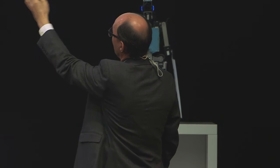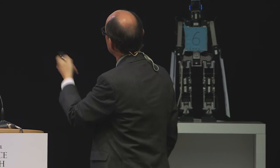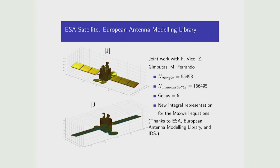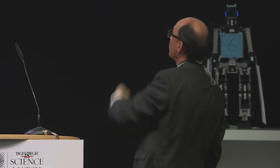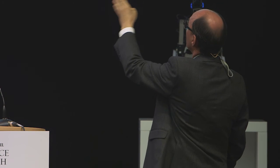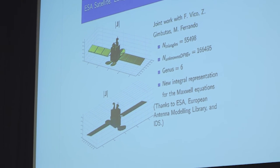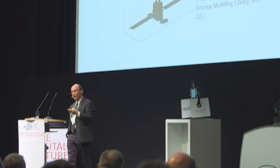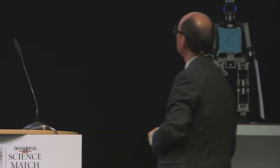Another class of problems involves electromagnetic scattering — a picture of an ESA satellite and how it behaves in response to incoming radiation. These are relatively complicated objects because they have holes which give them complicated topology, with many triangles describing the surface. The question is whether you can develop mathematical approaches that are both fast, high-order, and have guaranteed accuracy for these calculations.